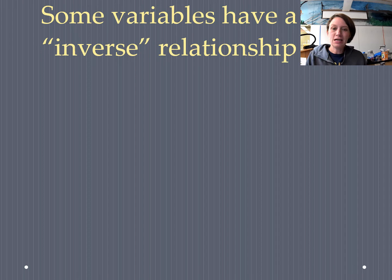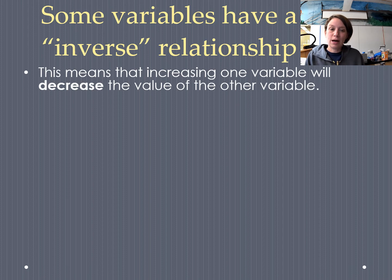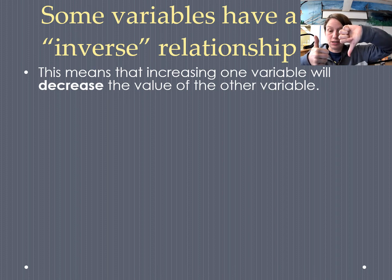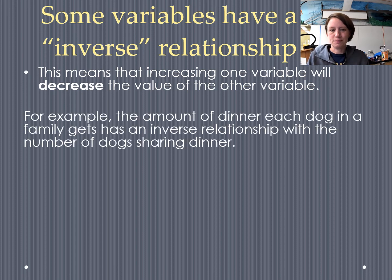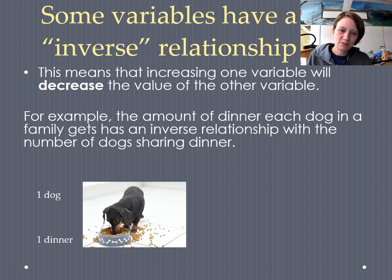The last mathematical relationship we're going to talk about this year is called an inverse relationship. An inverse relationship is pretty much the opposite of linear — sometimes increasing the value of one variable causes the other variable to decrease, or decreasing one causes the other to increase. For example, if you have a dog and it gets all of the dinner, one dog eats all of the food.